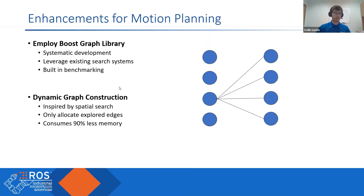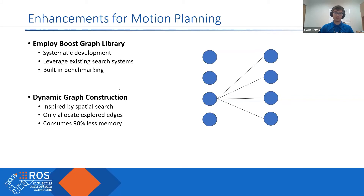Our approach now is to replace that and to do dynamic graph construction. The first step was actually replacing the core infrastructure of our Descartes Light library — we are now employing the Boost Graph Library. Anyone who's a developer in C++ is probably familiar with Boost. We selected Boost because it allows for more systematic development. It has pre-existing containers for nodes, edges, and methods for introspecting both of those, and it comes with its own search algorithms already implemented, which is great for discovering how to write algorithms within the framework and for comparing our own.